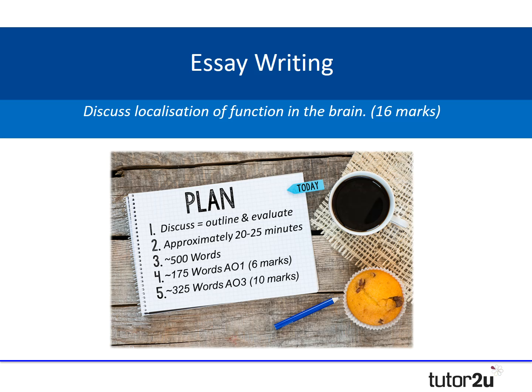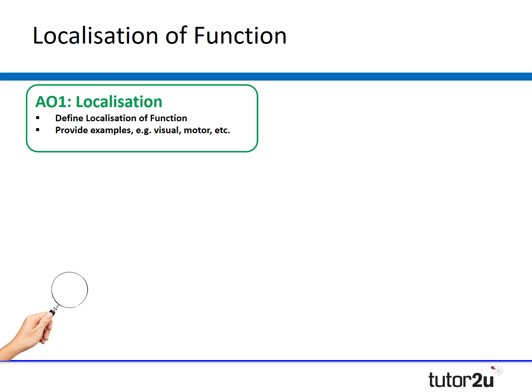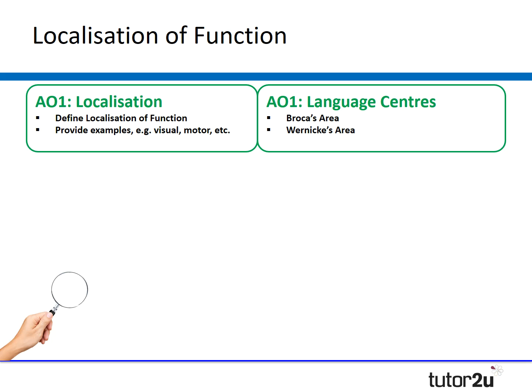Moving on to essay writing — discuss localisation of function in the brain for 16 marks. The term 'discuss' means outline and evaluate. You've got about 20 to 25 minutes, looking at around 500 words. Of that, about 175 words for your knowledge and about 325 words for the evaluation. I always think it's useful to have a concrete plan: for knowledge I'll define the term, provide examples of the four areas, and talk about the two language centres — aiming for around that 175 word mark.